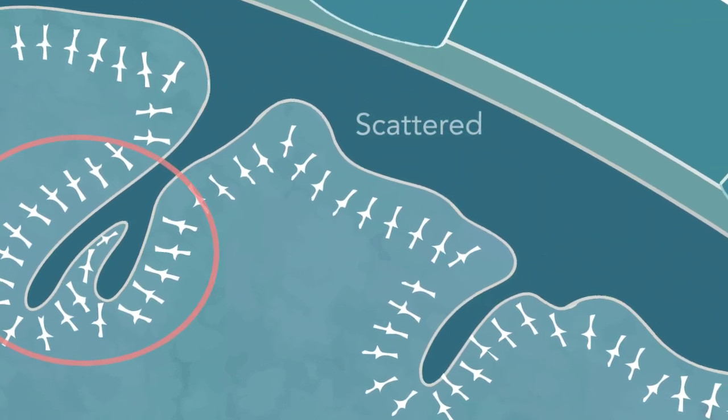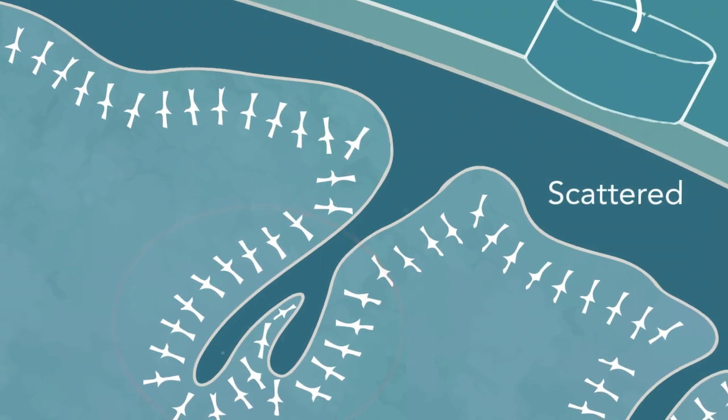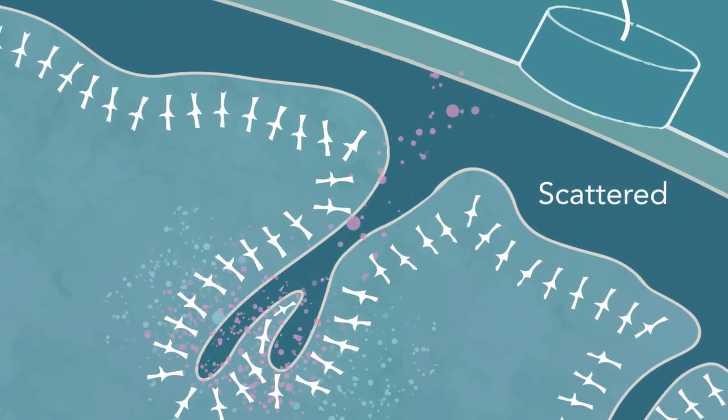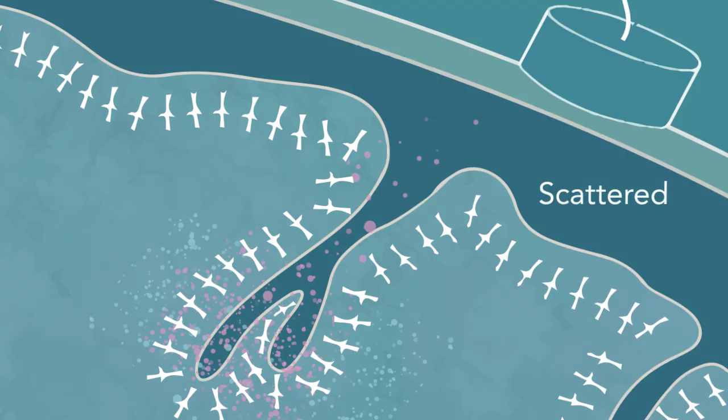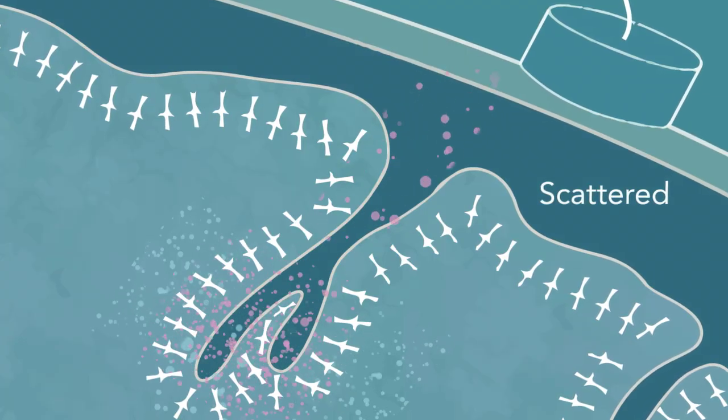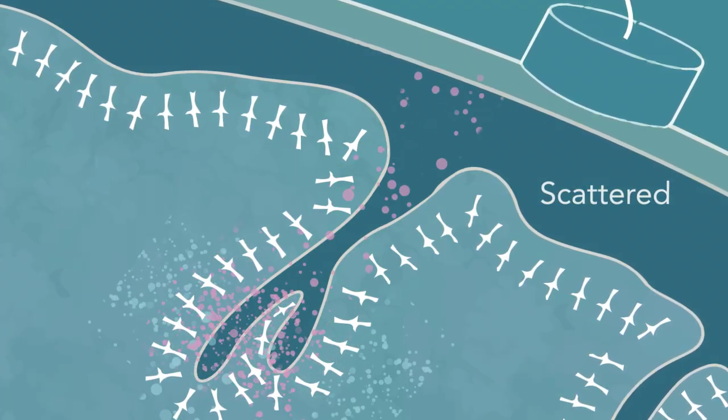Observe what happens when neurons are scattered in their alignment. Some of the signal is neutralized, but some is able to reach the scalp. Thus, varied dipole alignment only produces a weak signal.